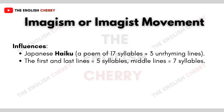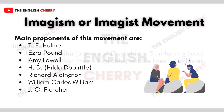This is the defining feature of haiku poetry. The main proponents of the Imagist group are T.E. Hulme, Ezra Pound, Amy Lowell, Hilda Doolittle, Richard Aldington, William Carlos Williams, and J.E. Fletcher.